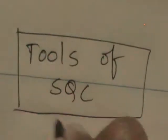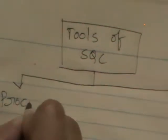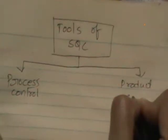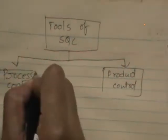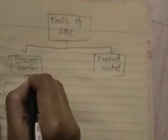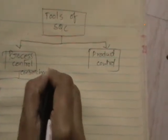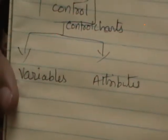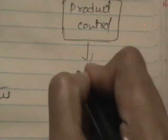Now let us see what are the tools of SQC. These two together are called the tools of SQC. The tools are used to decide whether the process is under statistical control or not. Process control is achieved using tools called control charts. Control charts are of two types: control charts for variables and control charts for attributes. Similarly, product control can be achieved by sampling inspection plans.